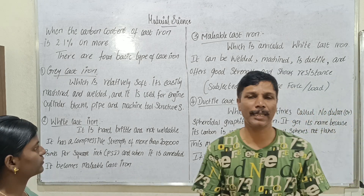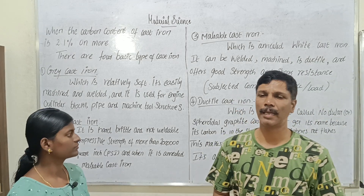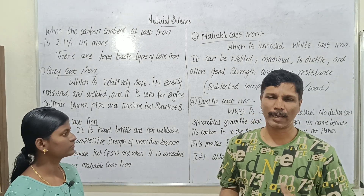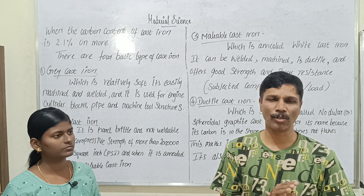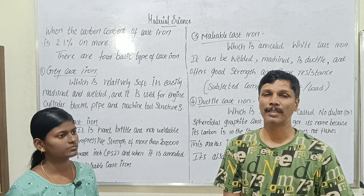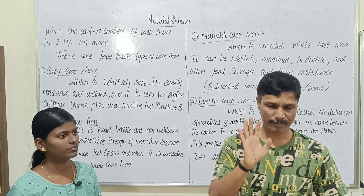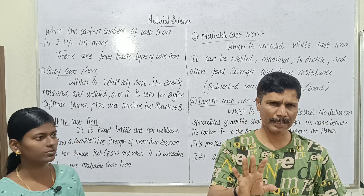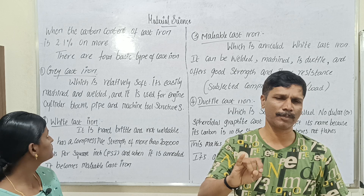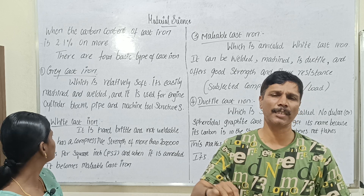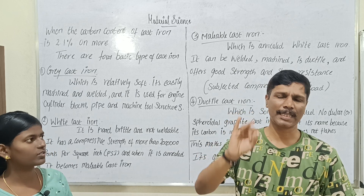So in summary, we have four types of cast iron: number one, gray cast iron; number two, white cast iron; number three, malleable cast iron; and number four, ductile cast iron.